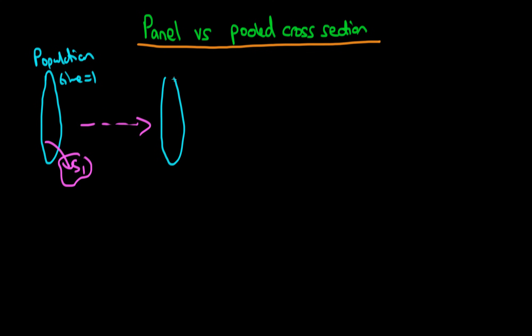and then at some point in the future or many points in the future we then have the same population of individuals but this is at some future point in time and we actually take another random sample of individuals and importantly it's not the case that these individuals which are sampled here are equivalent to those individuals which are sampled here.